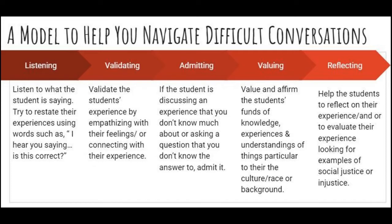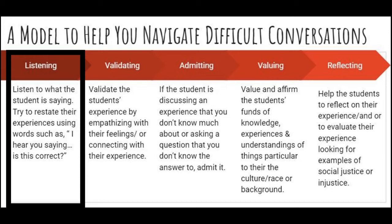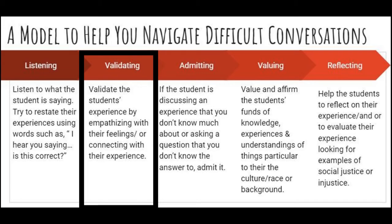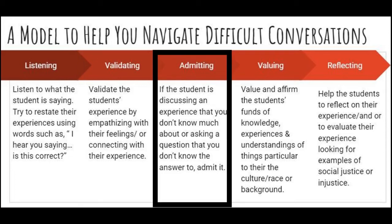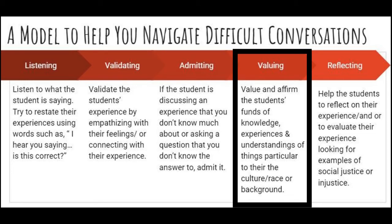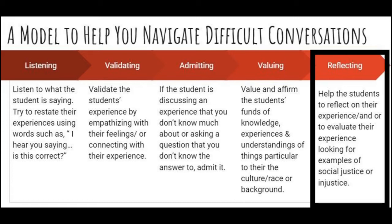I developed the following model to help me navigate difficult conversations, especially those pertaining to race. First, I always listen to what the student is saying and restate their experience using words such as, 'I hear you saying blank — is that correct?' or 'I hear you asking — is that correct?' Next, I validate the student's experience by empathizing with their feelings or connecting with their experience. If they've discussed something I don't know much about, I ask questions and admit it's a topic I don't have much information on. Then I value the student's funds of knowledge — affirming that all students have experiences and understandings particular to their culture, race, or background. Finally, I help students reflect on and evaluate their experiences, looking for examples of social justice or injustice.